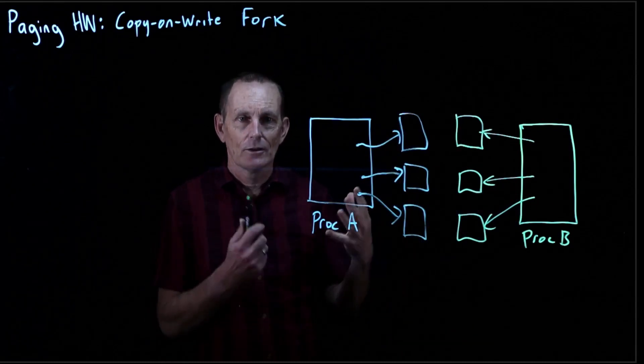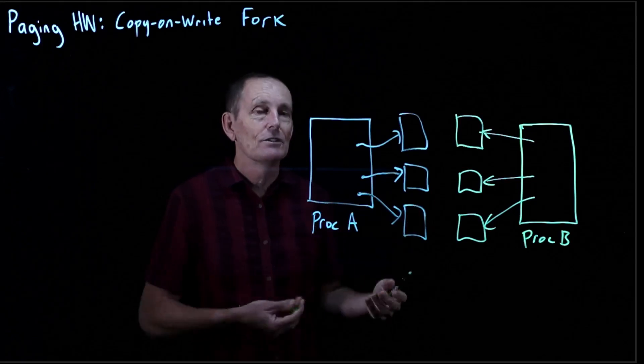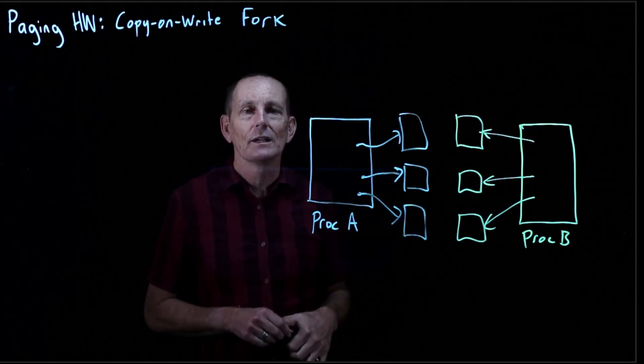And then process B and process A can now go about their business, and they have individual copies of everything. They're operating independently.